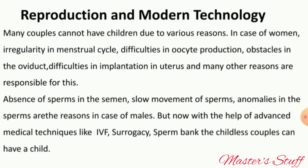Both couples can be unable to give birth to a child for various reasons. In the case of women, these include: irregularity in the menstrual cycle, difficulties in ovum production, obstacles in the oviduct, and difficulties in implantation in the uterus, among many other reasons.